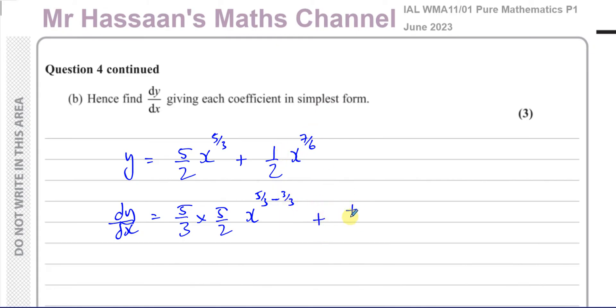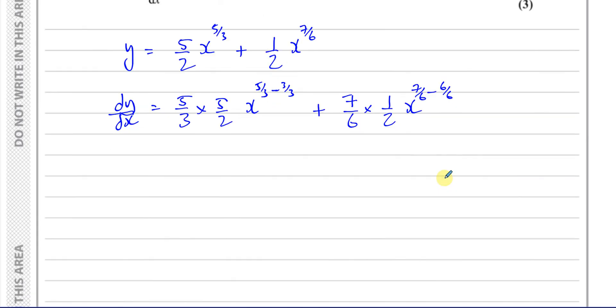Plus, multiply by the power, so you have 7 over 6 times a half x to the power of - and again, you're going to take away 1 from 7 over 6. It's like taking 6 over 6 from 7 over 6.